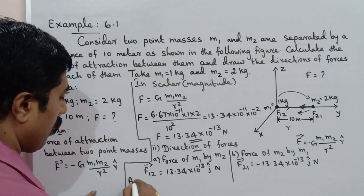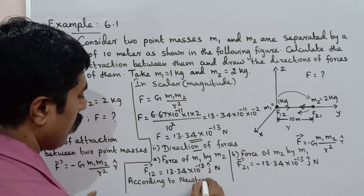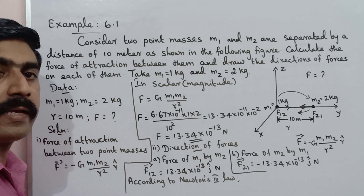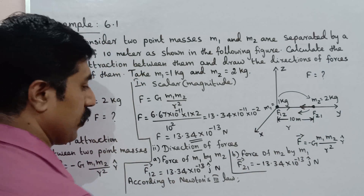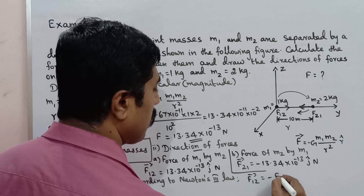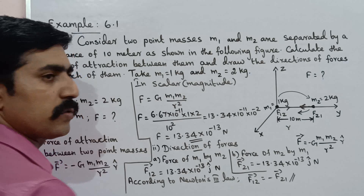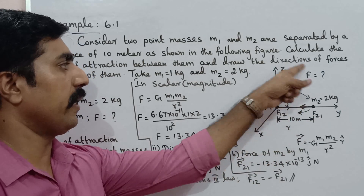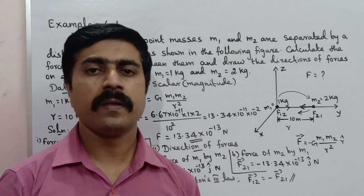According to Newton's third law — for every action there is an equal and opposite reaction — F1 and F2 are equal in magnitude but opposite in direction. So F12 vector equals minus F21 vector, verifying Newton's third law. This is the diagram; we can draw the directions accordingly. If you have any problem, you can practice with friends. All the best. Thank you.